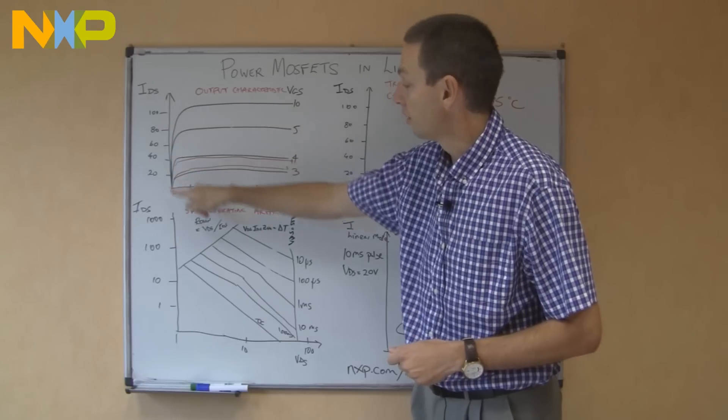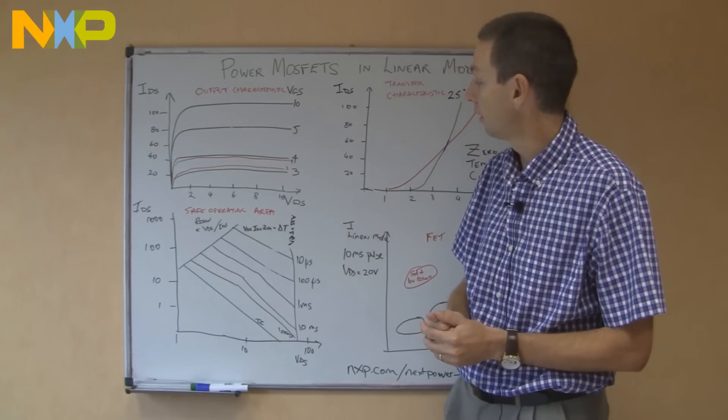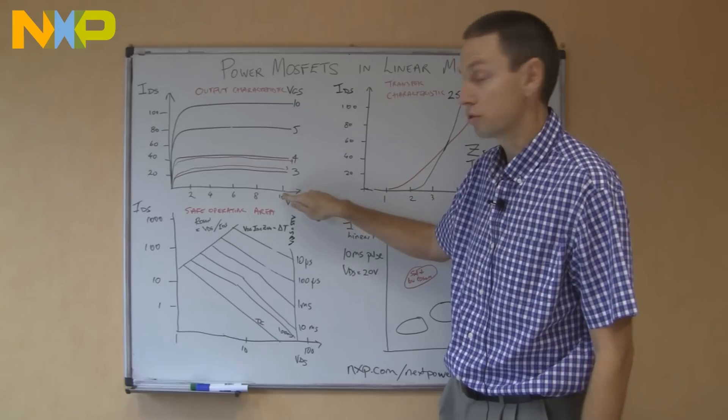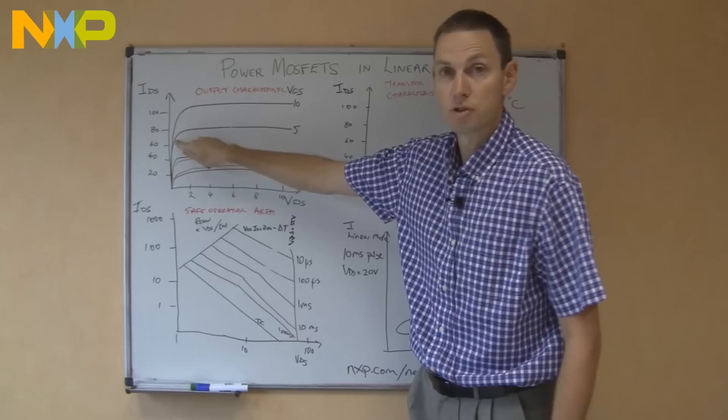There's a very small source drain voltage, there's a high current, but because there's a small source drain voltage, there's low power dissipation. So in the operation, we're moving from a position of zero power dissipation when it's off to low power dissipation when it's on.